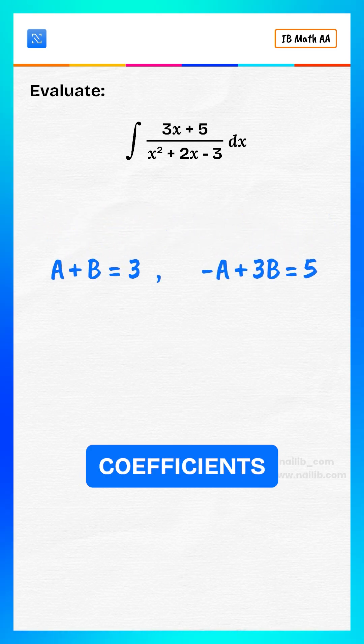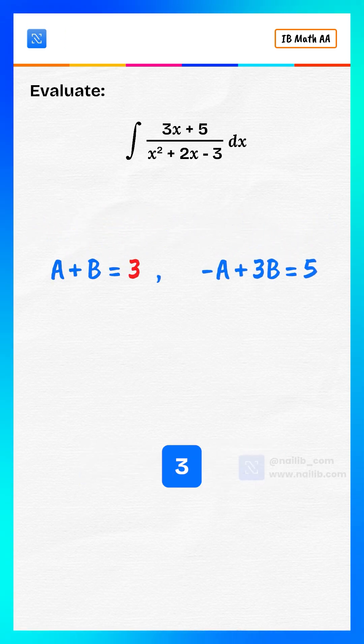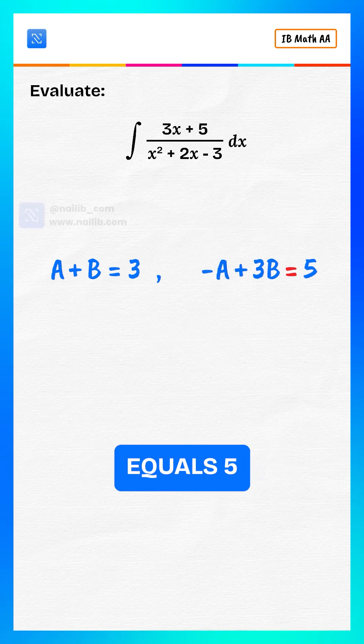Now compare coefficients. a plus b equals 3 and negative a plus 3b equals 5.